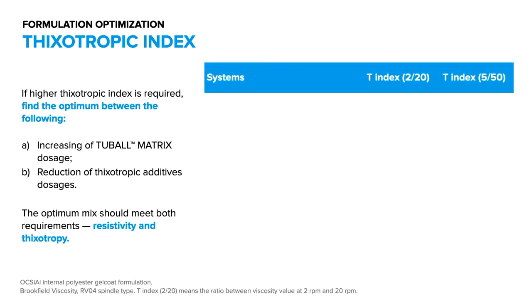But depending on the Tubal Matrix dosage, this effect can be limited and acceptable. To solve the complicated part where you get conductive properties on one hand and yet specific thixotropic index on the other, it is important to optimize and find the right balance between Tubal Matrix loadings and thixotropic additive.